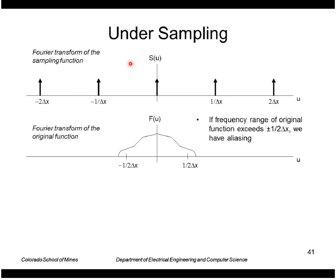This is our sampling function. Now let's say our image transform didn't go to 0 so quickly. In fact it was non-zero even past the halfway point here of 1 over 2 delta x.